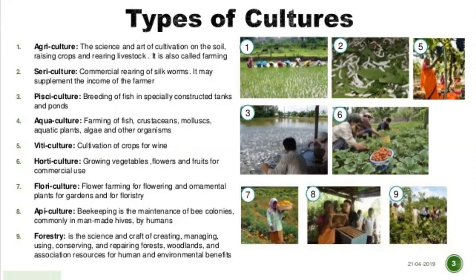Pisciculture is the commercial rearing of fish — the breeding of fish in specially constructed artificial tanks and ponds. Aquaculture is the farming of fish. Viticulture is the cultivation of crops for wine. Horticulture is the growing of vegetables, flowers, and fruits for commercial use. Floriculture is flower farming — growing flowering and ornamental plants for gardens and florists.